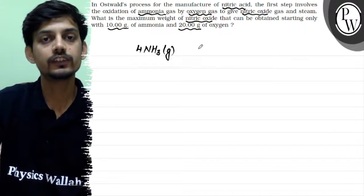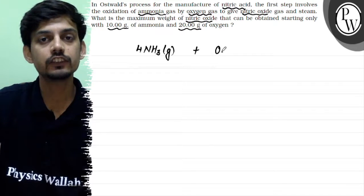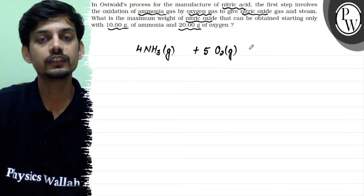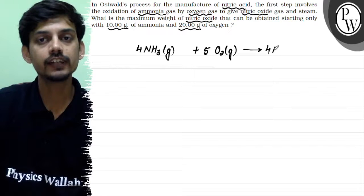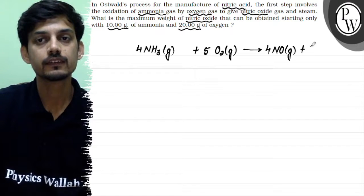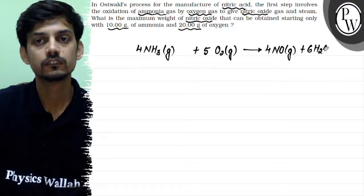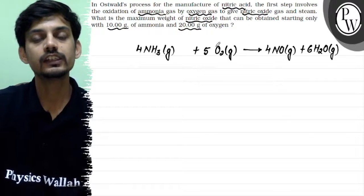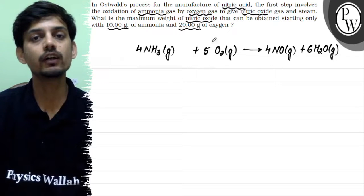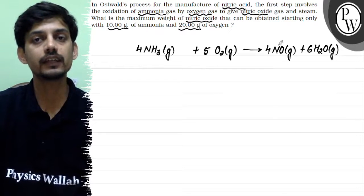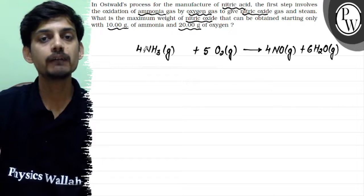The balanced equation will be 4NH₃ gas plus 5O₂ gas giving nitric oxide and steam. This is the balanced reaction where ammonia is oxidized to nitric oxide, and then in a further step nitric acid will be prepared. So let us see the stoichiometry.